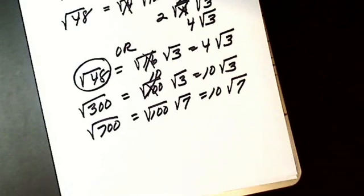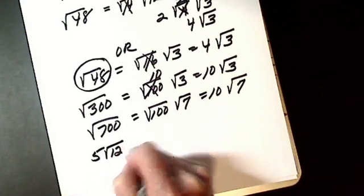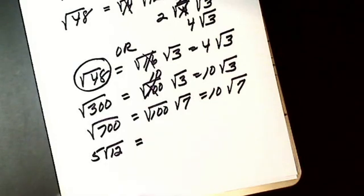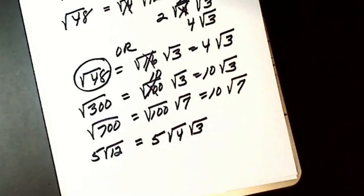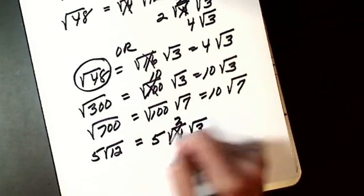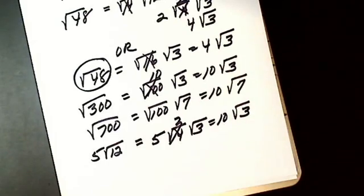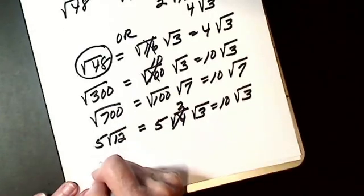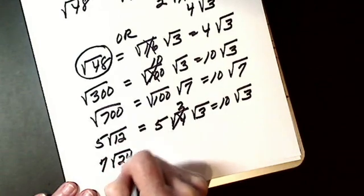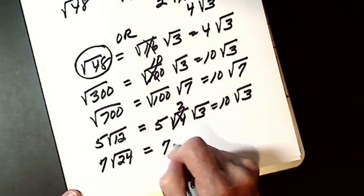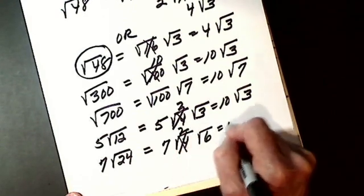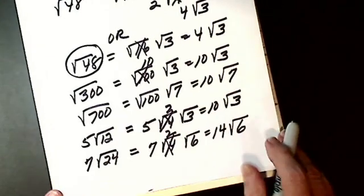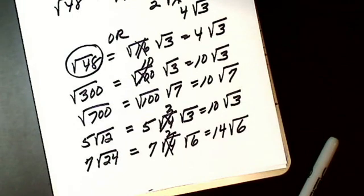Let's do two more with coefficients. Let's say I have 5 the square root of 12. My 5 stays; I'm only simplifying my 12. So I get 4 times 3 — the square root of 4 is 2 — so I get 10 the square root of 3. Let's say I have 7 the square root of 24. My 7 stays. I break this down into 4 and 6. The square root of 4 is 2. So I get 14 the square root of 6. Inside I think I can break 6 down into 2 and 3, but I don't because I can't simplify either of them.